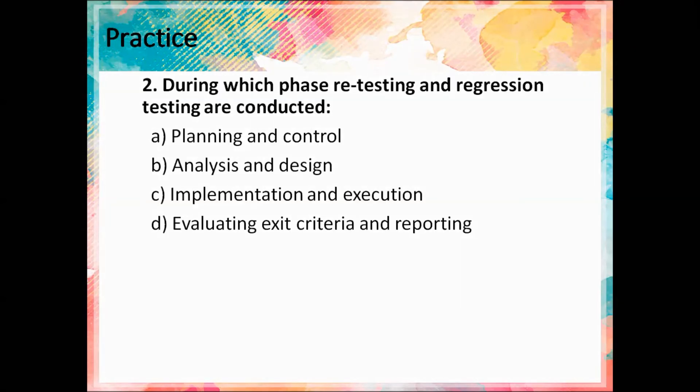Next question: during which phase are retesting and regression testing conducted? A — Planning and control. B — Analysis and design. C — Implementation and execution. D — Evaluating exit criteria and reporting. The correct answer is C — implementation and execution.